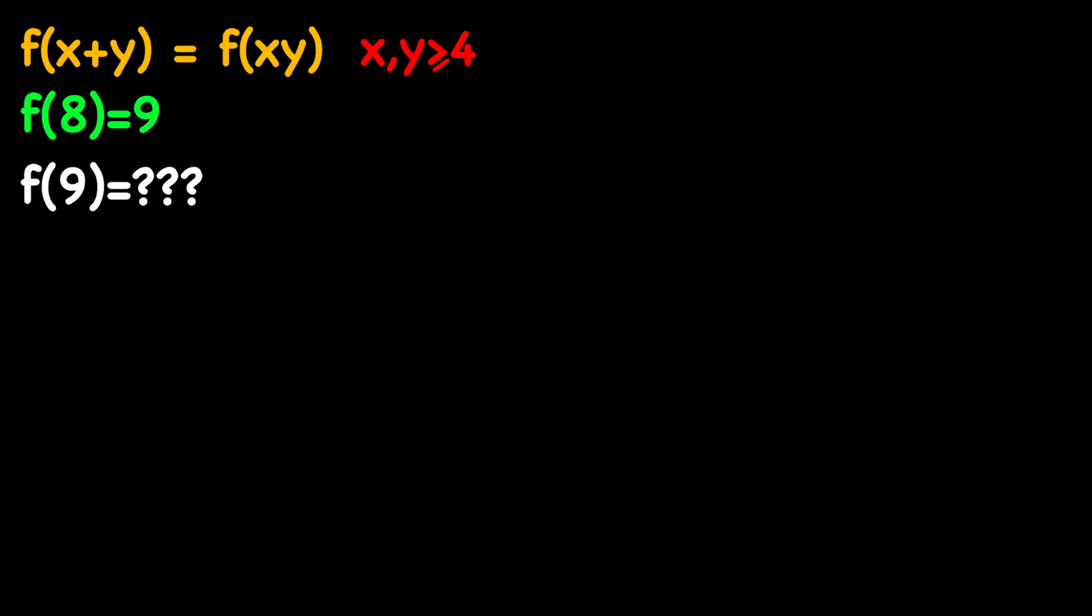So we want to find f of nine, so let's start with that. f of nine, and let's replace nine with four plus five. And notice that we know that f of x plus y equals f of x times y. Therefore, we can turn the sum into a product and say that this equals f of four times five.